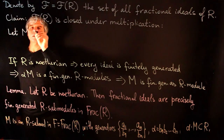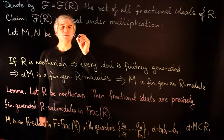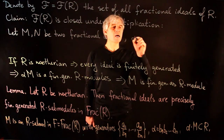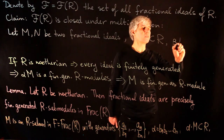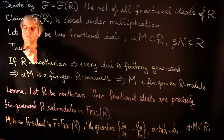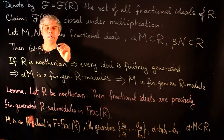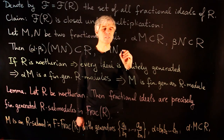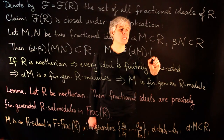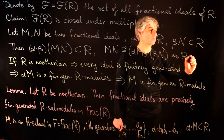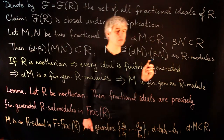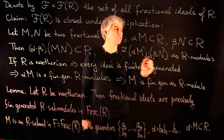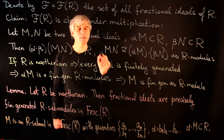Let M and N be two fractional ideals. Suppose α·M is inside R and β·N is also inside R. Then α·β·(M·N) is inside R. And M·N is isomorphic to (αM)·(βN) as R-modules. Since αM is an ideal in R and βN is an ideal in R, their product is an ideal, hence an R-submodule, and thus M·N is a fractional ideal.